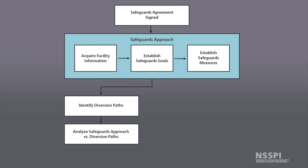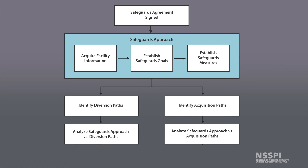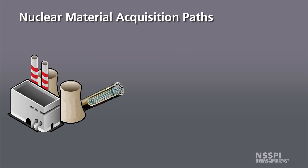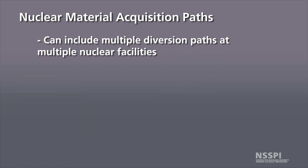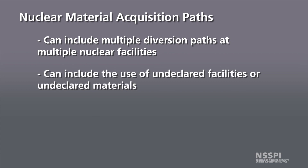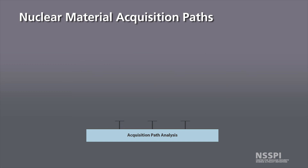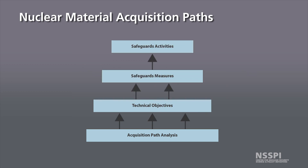Once the diversion path analysis is complete, the IAEA must also consider nuclear material acquisition paths. These refer to a hypothetical scheme which a state could consider to acquire nuclear material usable for the manufacture of a nuclear explosive device. This could include multiple diversion paths at multiple nuclear facilities, or the use of an undeclared facility or undeclared material. An acquisition path analysis is then conducted to determine whether the proposed safeguards measures provide sufficient detection capability across all possible acquisition paths.